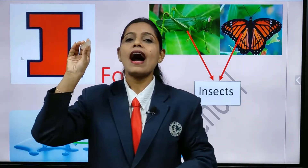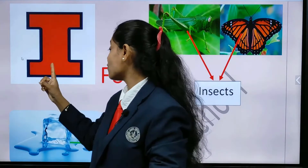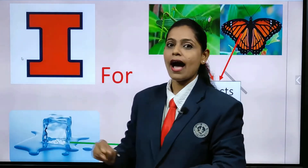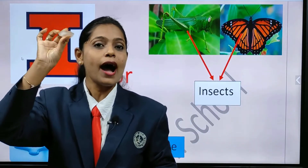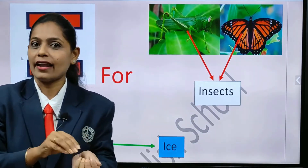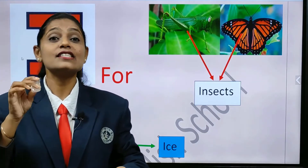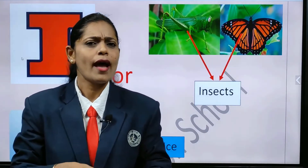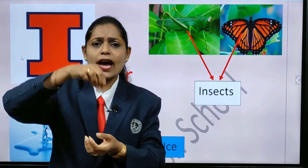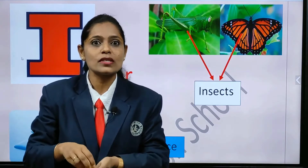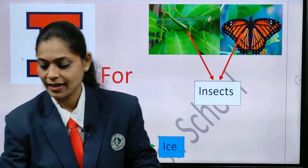I for ice. What are we going to say, children? I for ice. And how is it? It is cold. And what happens when we put a piece of ice in a juice? Yes, it becomes cold, right?